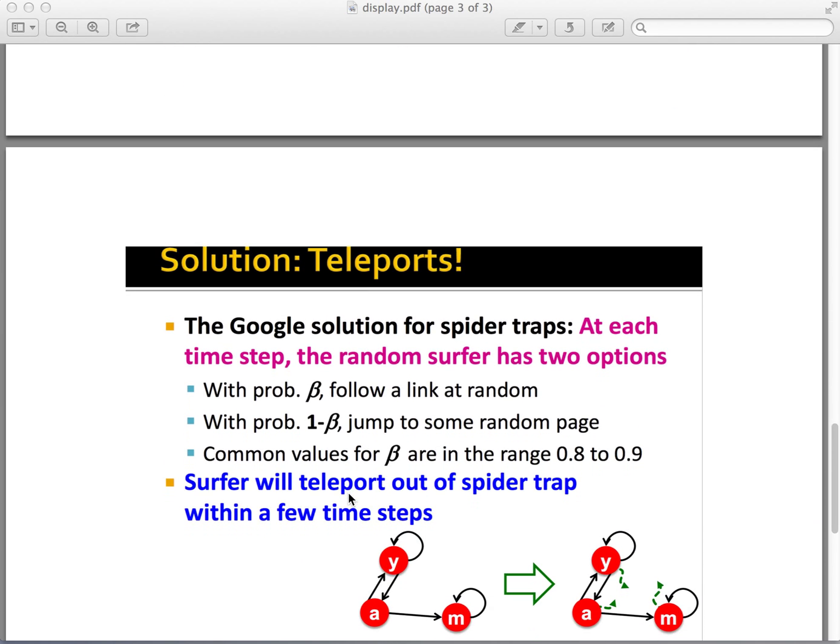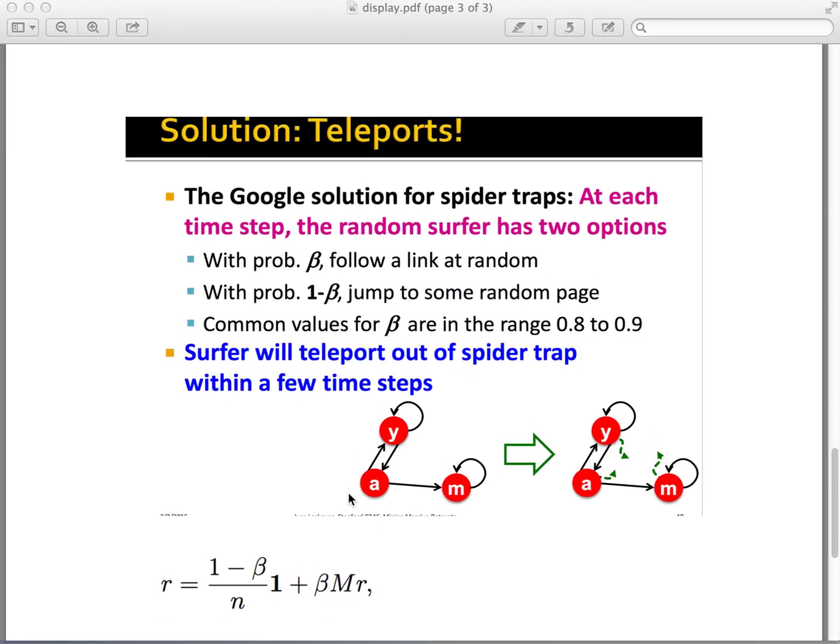To solve this problem, we use teleports. At each time step, the random surfer has two options. With probability beta, follow a link at random. With probability 1 minus beta, jump to some random page. The surfer will teleport out of the spider trap within a few time steps.